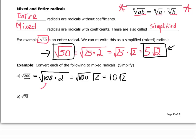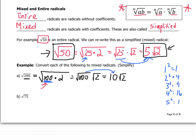Why did I use the square root of 100? Because 100 is a perfect square — I know the square root of 100 is 10. It's helpful to write down the perfect squares: 1 squared is 1, 2 squared is 4, 3 squared is 9, 4 squared is 16, 5 squared is 25, and so on. Know at least the first 10 perfect squares. If instead you broke 200 into 4 times 50, you'd get the square root of 4 times the square root of 50, which is 2 times the square root of 50 — and that's still correct, just more work.